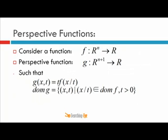Consider a function f which maps an n-dimensional vector to a real number. Its perspective function is a function g which maps an n+1 dimensional vector to a real number. The relation between f and g is that g is a perspective function of two variables x and t, where x is an n-dimensional vector and t is a real number, and g equals t times f of x over t.